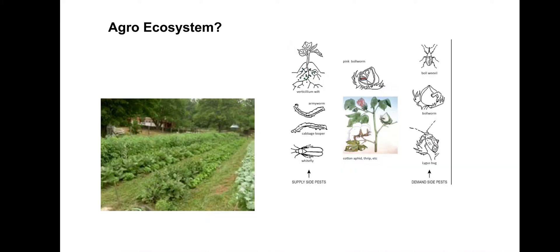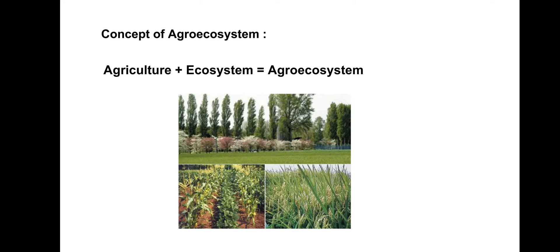We need to discuss about agro-ecosystem. An agro-ecosystem is the basic unit of study in agroecology. It includes biophysical and socioeconomic components, boundaries and hierarchies, structure and function, history and legacy. Agro-ecosystem — agriculture plus ecosystem — is a spatially and functionally coherent unit of agricultural activity which includes the living and non-living components involved in that unit as well as their interactions.